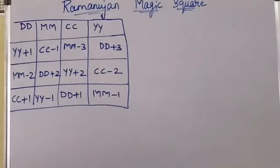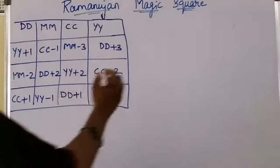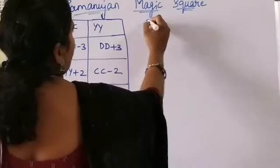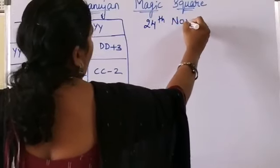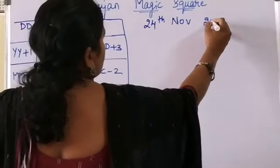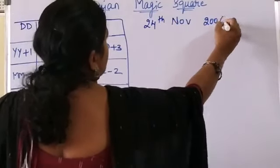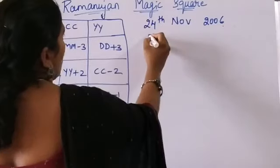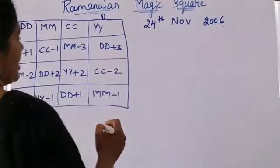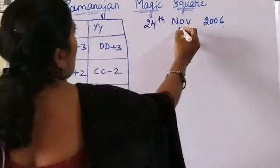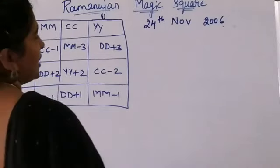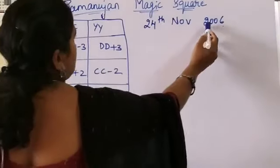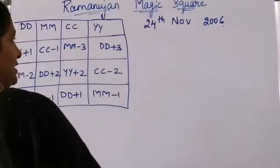Now I will explain by taking one date of birth. Suppose 24th November 2006. Here, 24 is the date, November is the 11th month, and 2006 gives us CC = 20 and YY = 06.